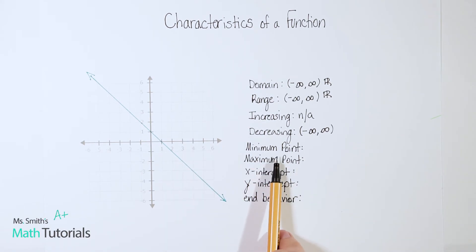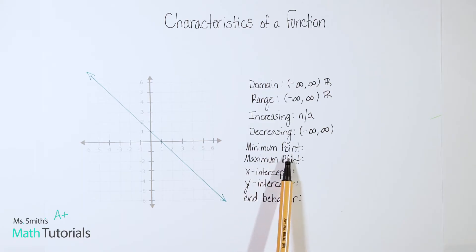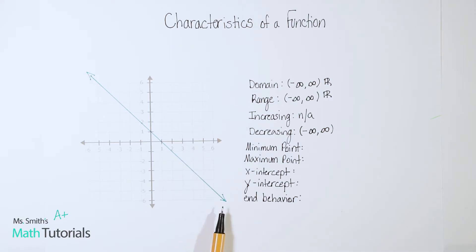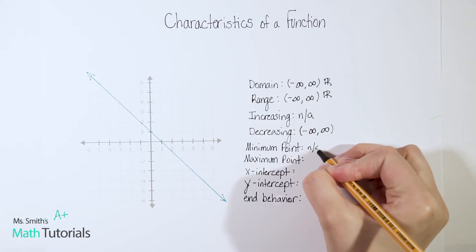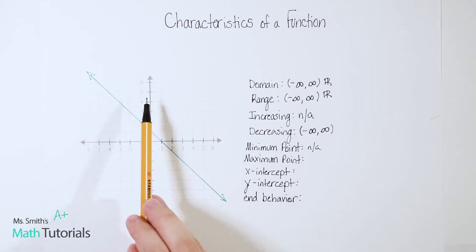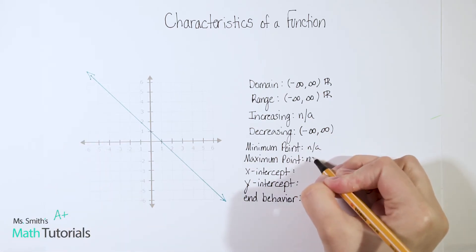Next, we need to pick out if there is a minimum point — and the key word is point. Ask yourself: is there a lowest place on the graph where this line will stop? The answer is no. I see this arrow and I know this graph is going to go on down for infinity, so there is no minimum point I can pinpoint. Infinity is not an actual point — it just means it goes on forever. So that's N/A or none. Similarly, is there a maximum point? No — this graph as far as height is going to go up towards infinity. So again we have N/A.